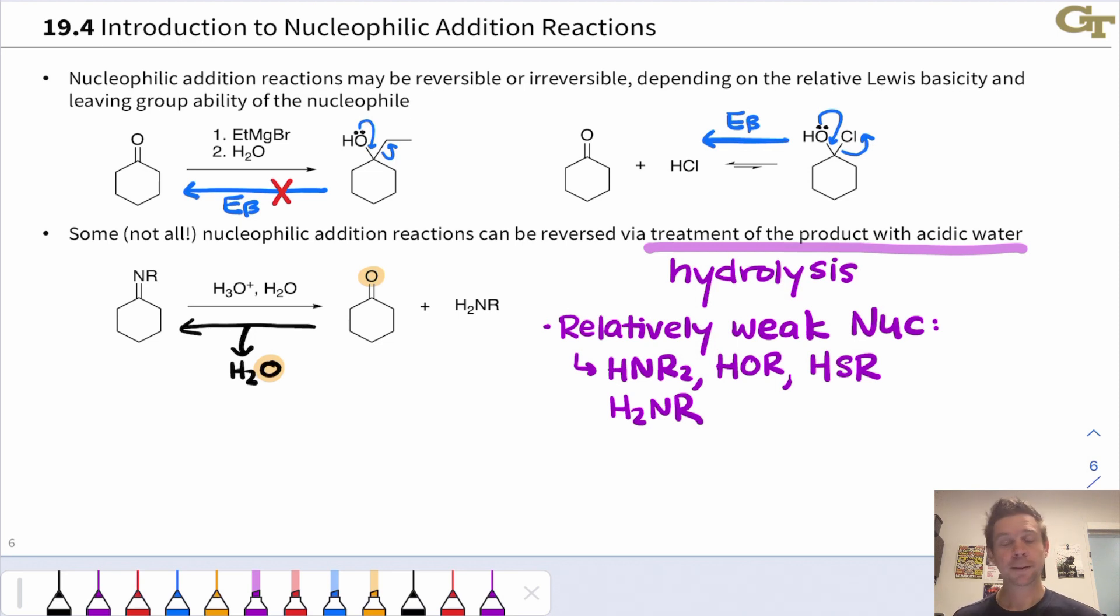Many nucleophilic additions of relatively weak nucleophiles are reversible and we can control the product formed by using either an excess of the nucleophile or an excess of water. For example, if we look at this reaction from right to left, we'll see that this involves the addition of a nitrogen nucleophile and an amine to the carbonyl carbon. Ultimately, with the loss of water, we end up with a C=N double bond. We'll dig into the details of this reaction a little bit later.